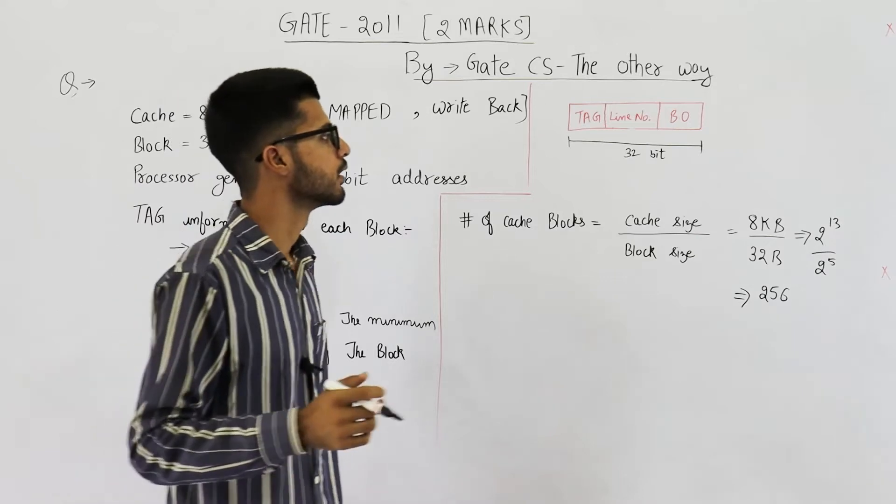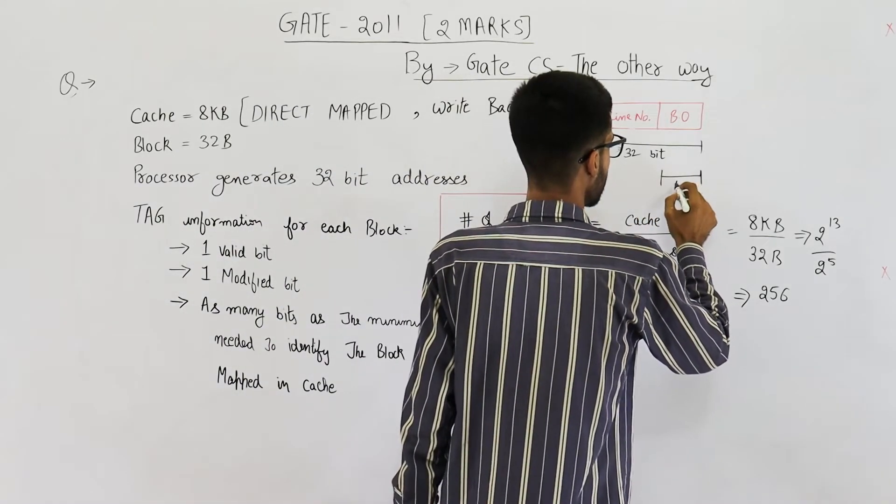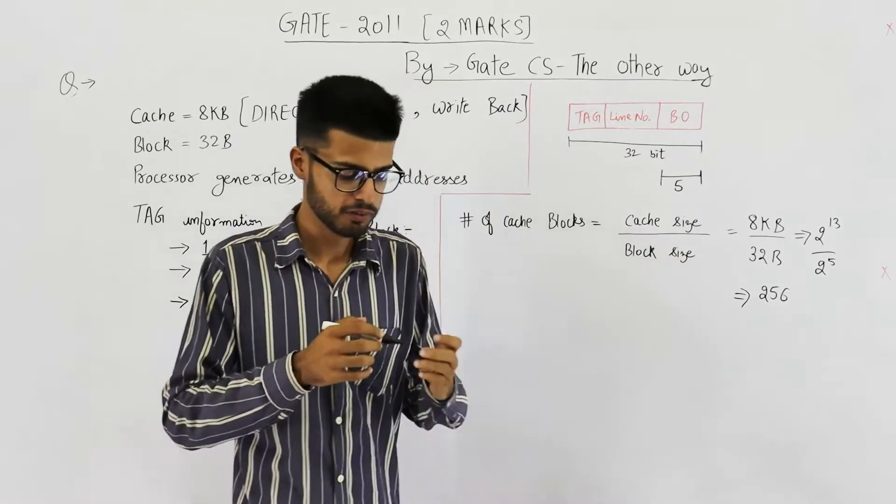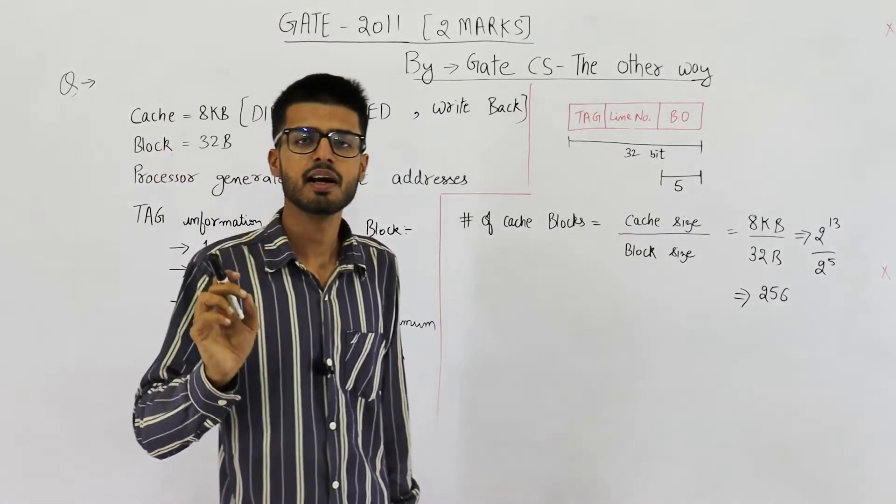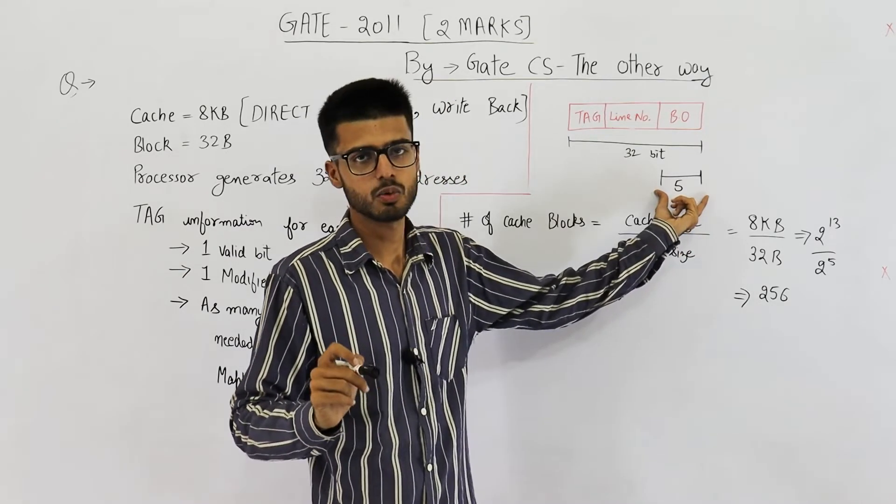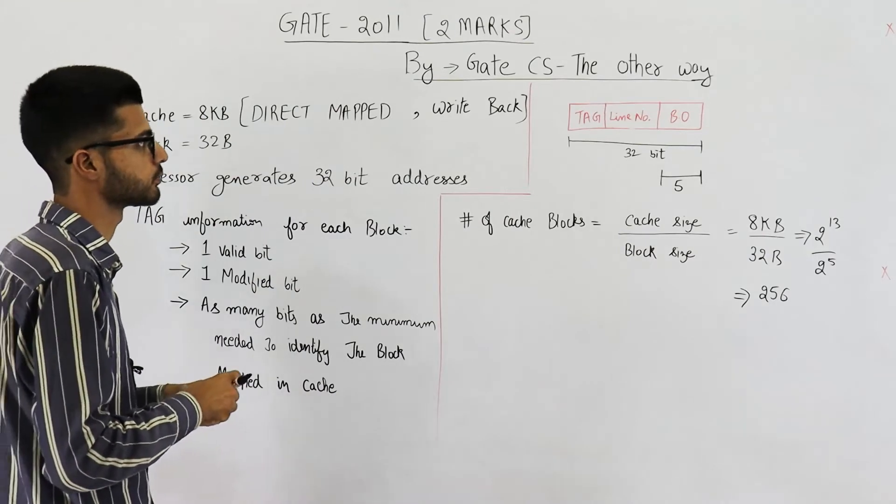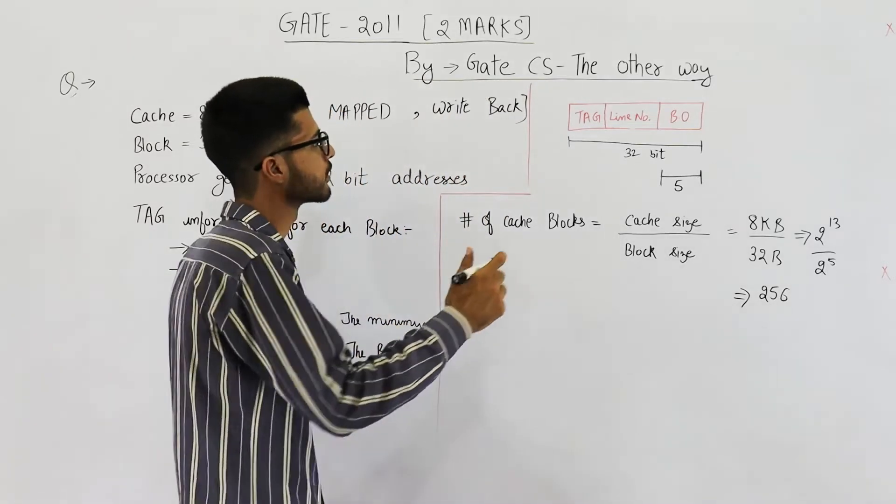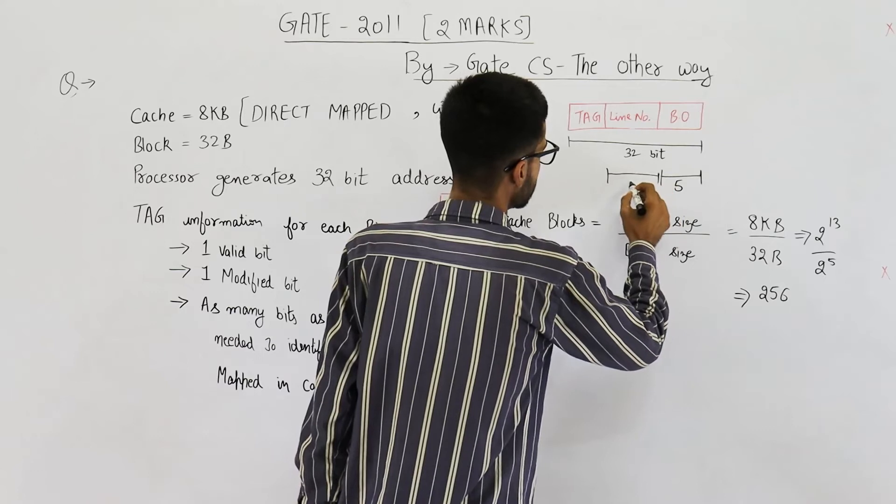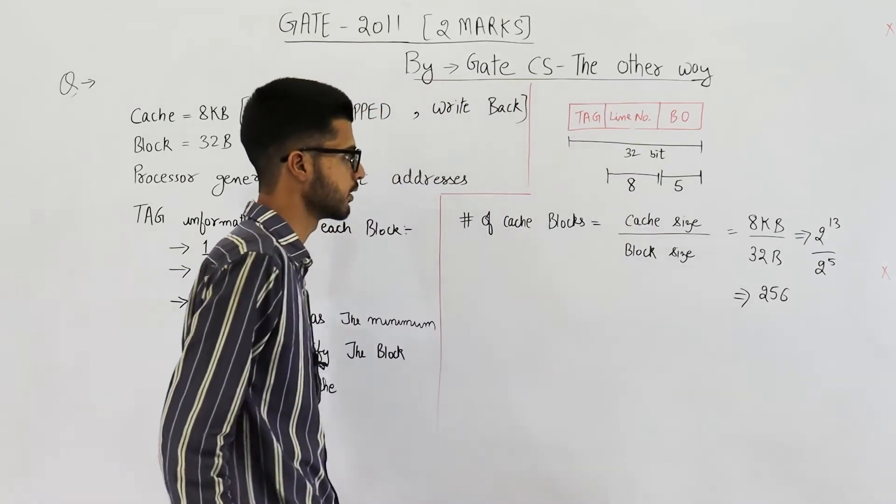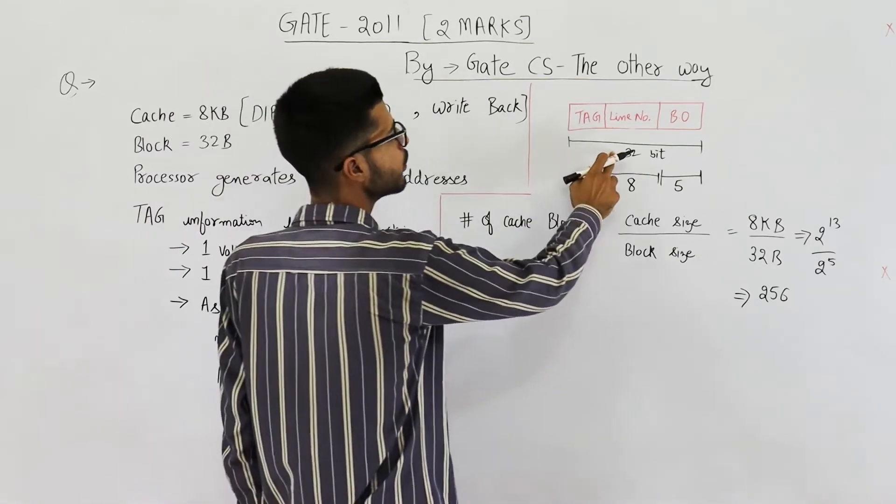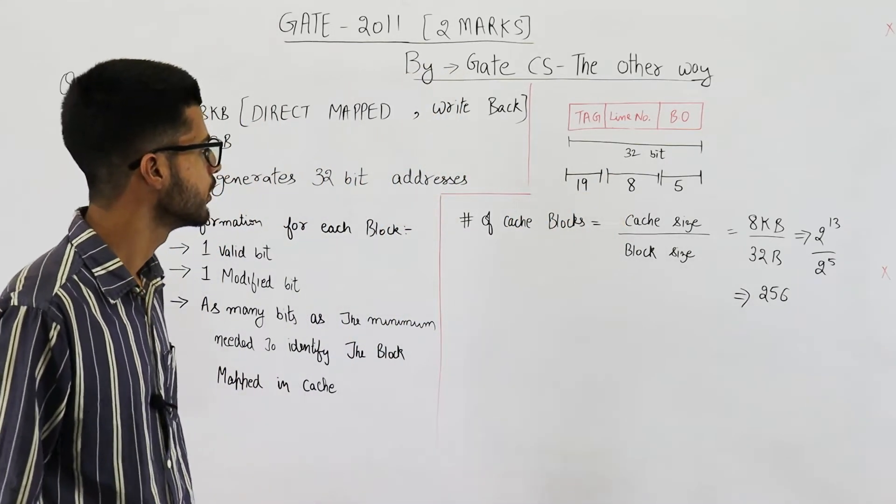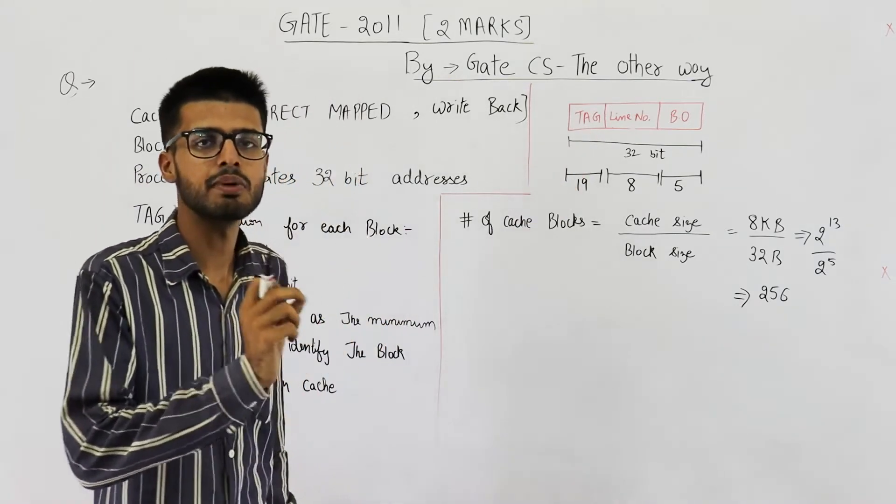And there are 32 bytes in a block. Assuming memory is byte addressable, you'll get to know that 5 bits will be required for identifying one word out of these 32. That means block offset will be 5 bits. Block offset is used for identifying one word out of the block. Now we have 256 blocks or lines in cache. That means 8-bit address will be required to identify one line. So line number field is 8 bits. 5 plus 8 is 13. 32 minus 13 will be 19. So tag is 19 bits in length.